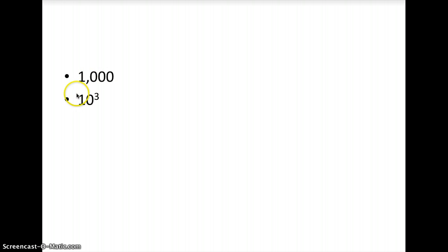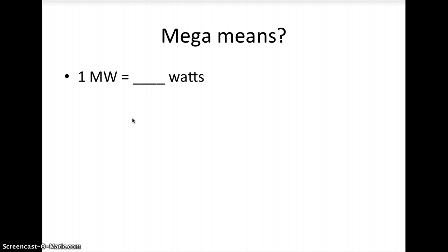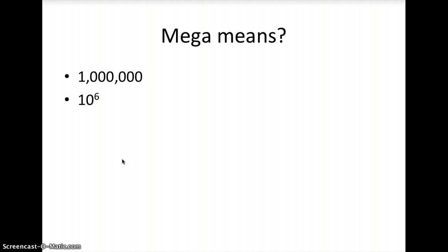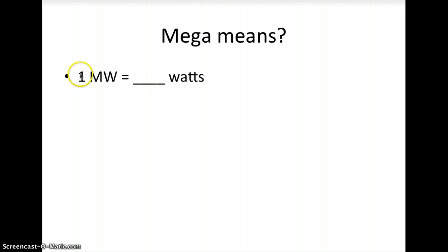Another way of writing a thousand, which you'll see on the AP exam, is ten to the third — a convenient way of writing numbers that tells you how many zeros are in the number: three zeros, so one thousand. How about mega? That's another unit you might see, like a megawatt. How many watts are in one megawatt? Hopefully you got a million — mega means a million, ten to the sixth, six zeros. So one megawatt equals one million watts. Here's another question: how many kilowatts are in one megawatt? I'm not going to answer that — I want you to answer that in your notes.